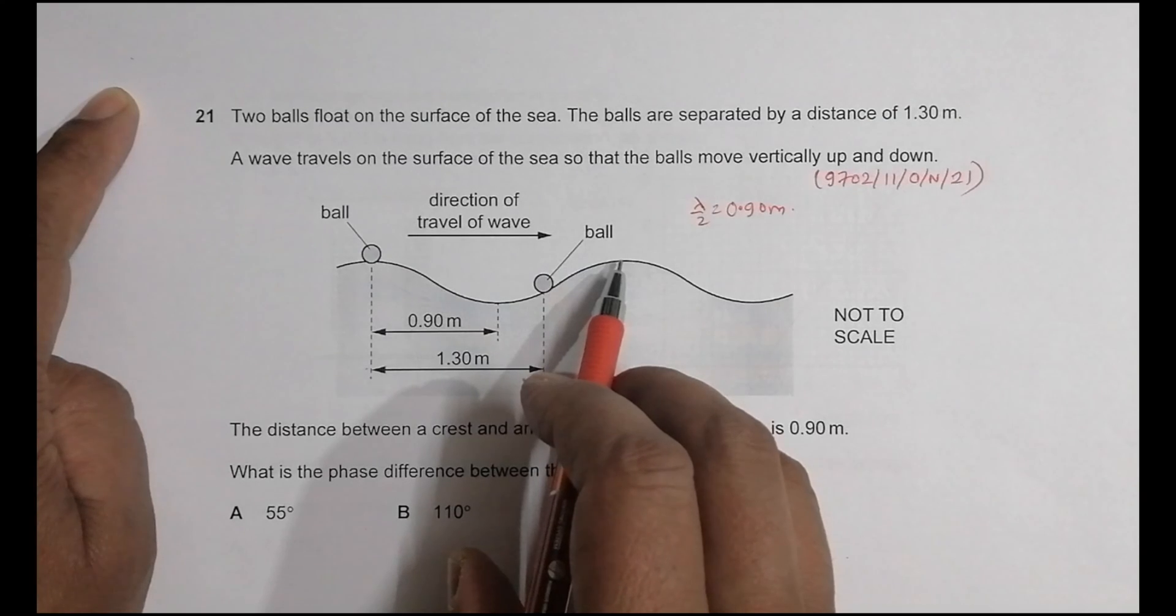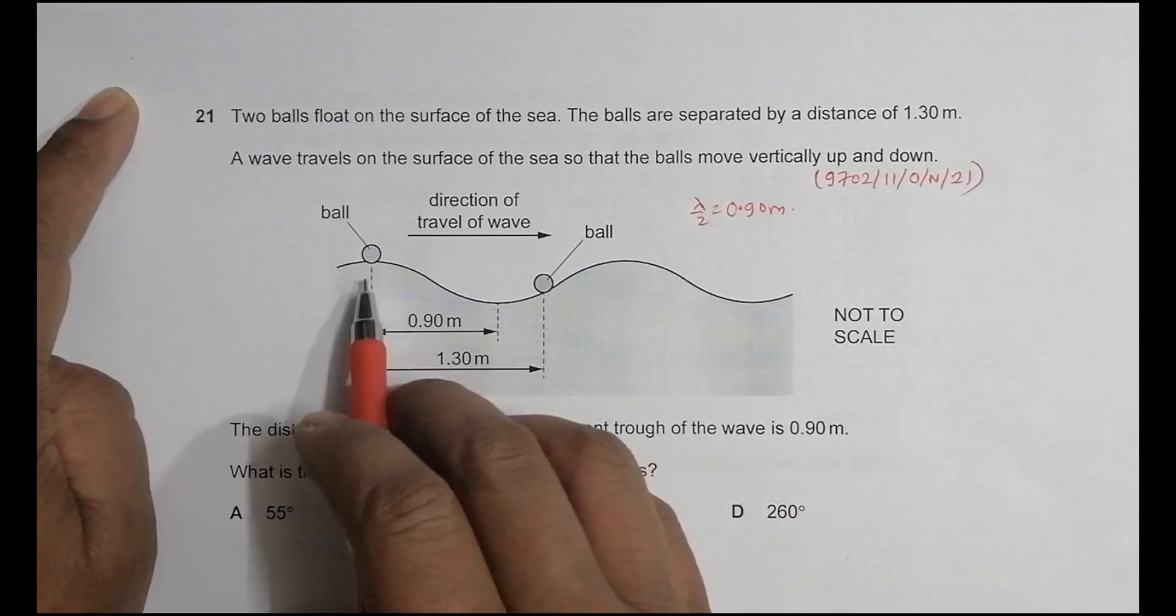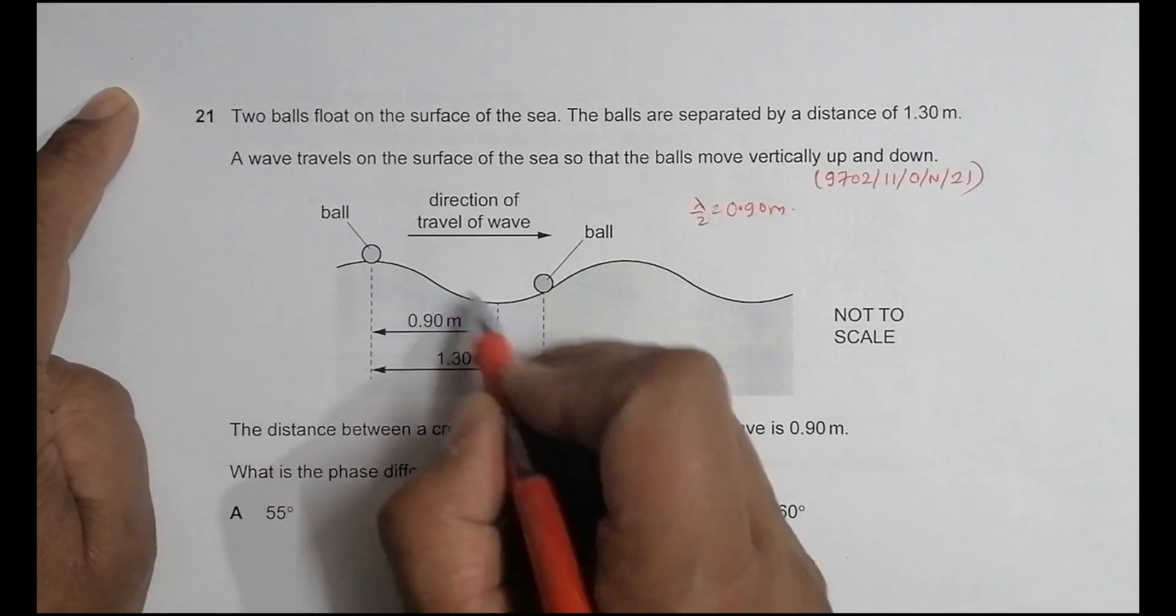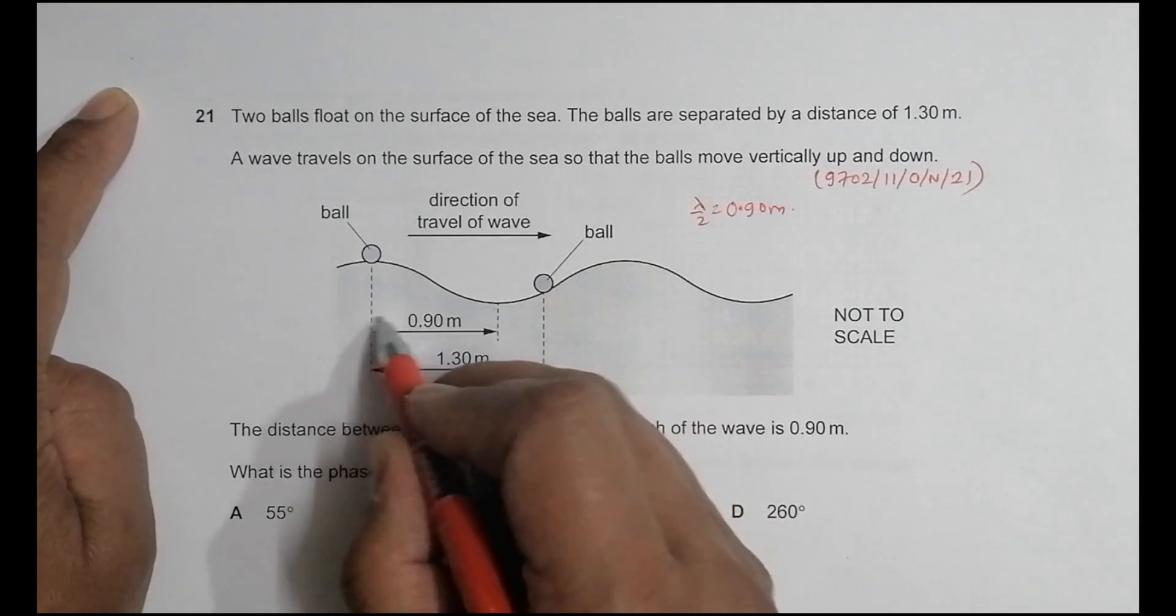From trough to trough it is lambda. But from crest to trough it should be lambda by 2. And we measure lambda by 2 like this, not like this, not like this, but like this.